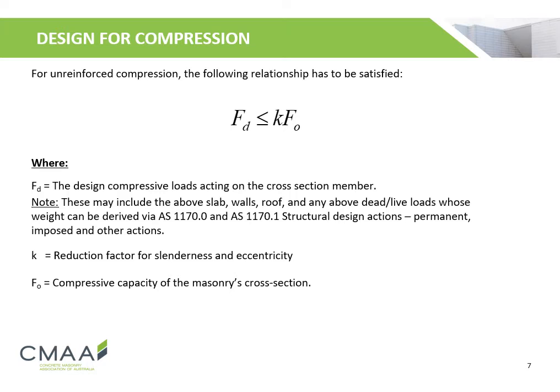For unreinforced compression, the following relationship has to be satisfied, where Fd is the design compressive load acting on the cross-section member, K is the reduction factor for slenderness and eccentricity, and F0 is the compressive capacity of the masonry's cross-section.